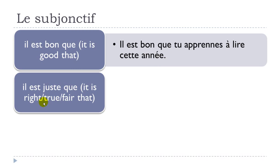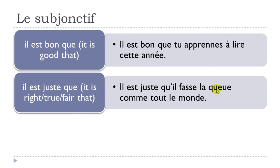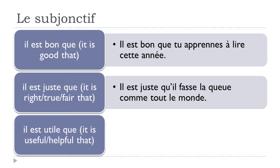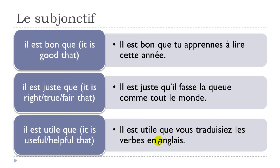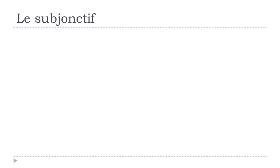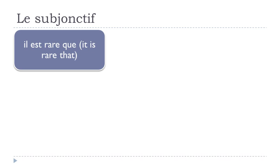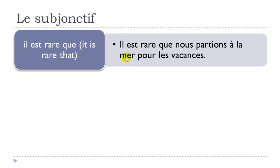Il est juste que — it is right, fair, that — il est juste qu'il fasse la queue comme tout le monde. Il est utile que — it is useful, helpful, that — il est utile que vous traduisiez les verbes en anglais. Il est rare que — it is rare that — il est rare que nous partions à la mer pour les vacances.